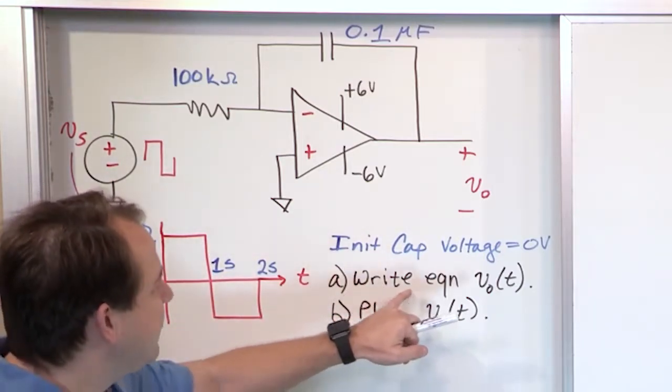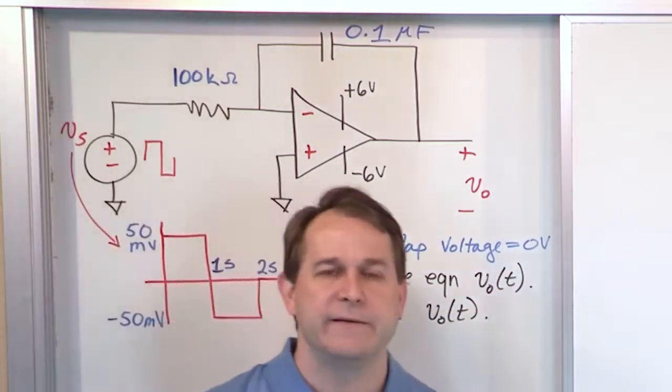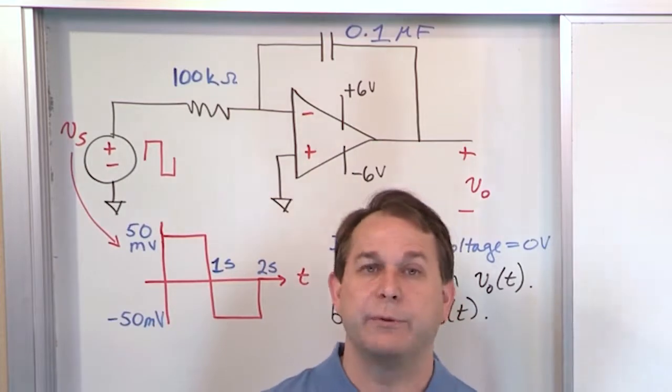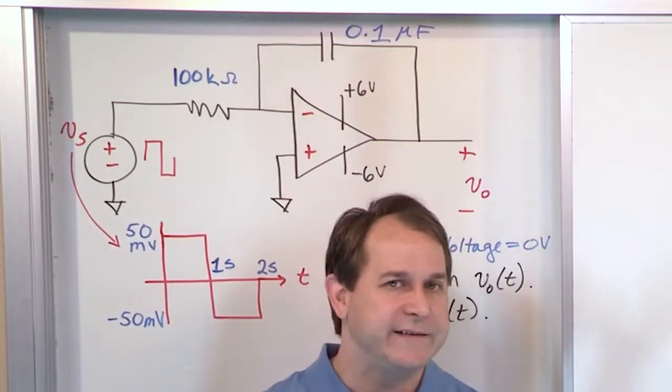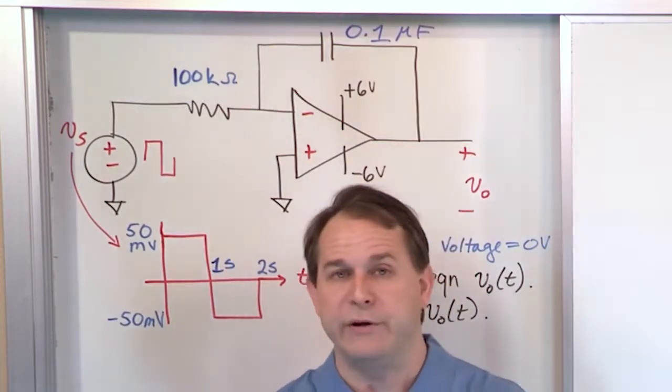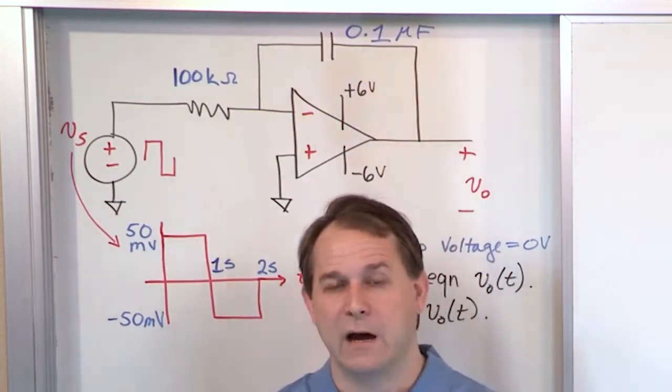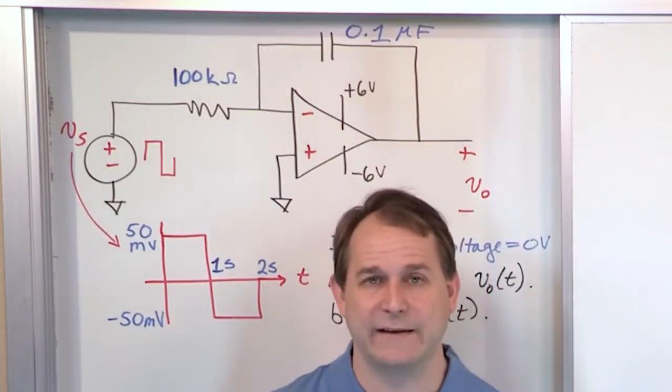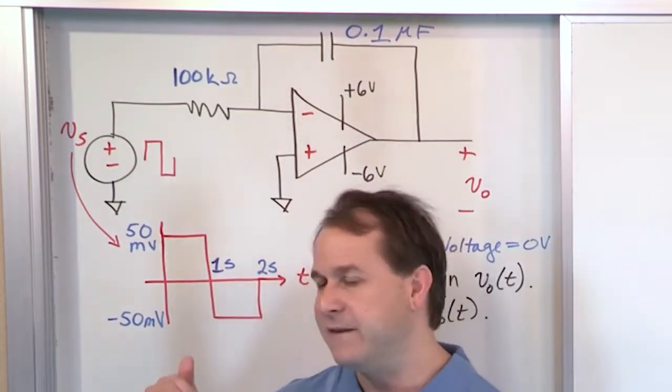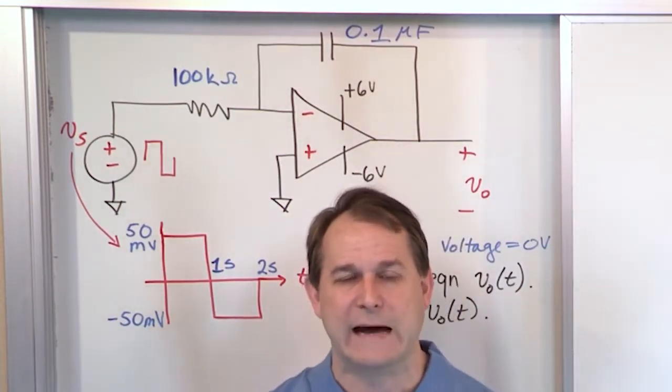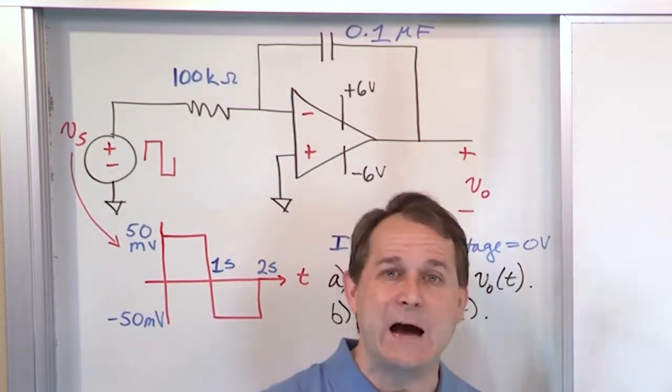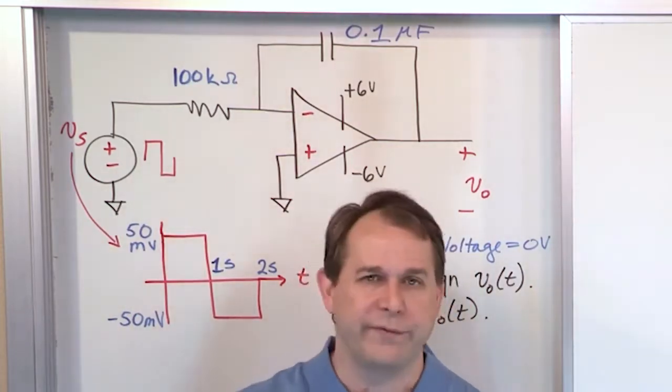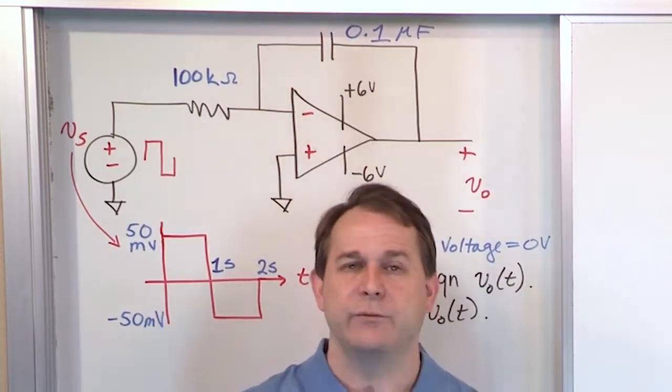When we say write the equation for the output, they're not going to tell you to break it up into regions. You're just supposed to know that. They didn't tell you to write two separate output equations, one in the first window of time and the second one in the second window of time. You're supposed to know that if it's discontinuous like that, you break region one up and find the output equation for that region, and then you move to the second region and do the whole thing again for that second region.